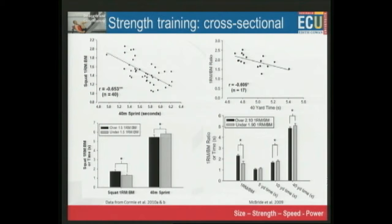Some other data from our studies published in 2010: looking at the cross-sectional relationship between squat strength and 40m sprint. Athletes that can squat more than 1.5 bodyweights versus less than 1.5 bodyweights — the stronger athletes are faster. Data from Jeff McBride's group in the US shows athletes squatting more than 2 bodyweights versus 1.9 bodyweights: no difference for 5 yards, but significant difference at 10 metres and 40 metres. The stronger the athlete, the faster and more powerful they are.